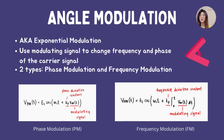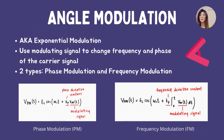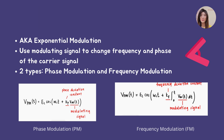Hi, I'm Jingwen, and now I'm going to expand on angle modulation. Angle modulation, also known as exponential modulation, uses the modulating signal to change the frequency and phase of the carrier signal. There are two types of angle modulation: phase modulation and frequency modulation. At the left side is the phase modulation formula, and at the right side is the frequency modulation formula.